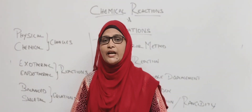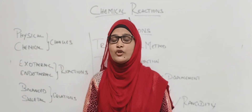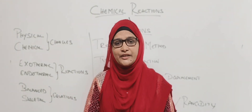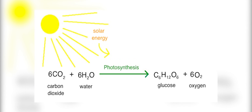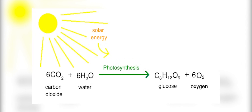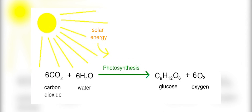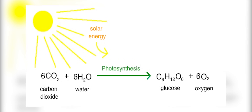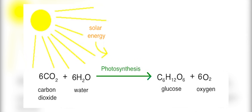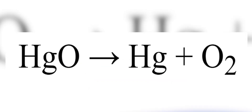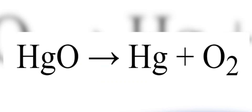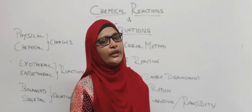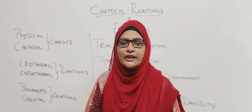Now we will talk about endothermic reactions — absorption of heat. The heat is absorbed, so it is an endothermic reaction. Photosynthesis is an endothermic reaction: plants require carbon dioxide plus H2O, and in the presence of sunlight, it gives glucose plus oxygen. Mercury oxide plus heat gives mercury plus oxygen — this is also an endothermic reaction.